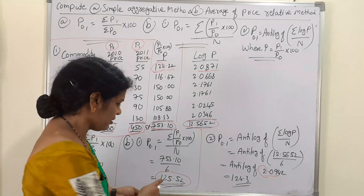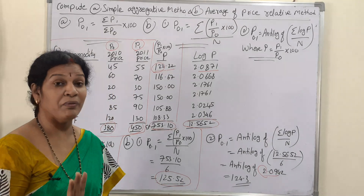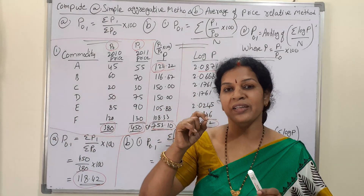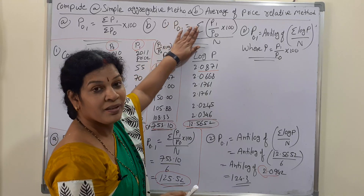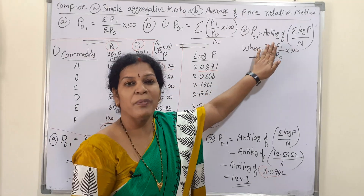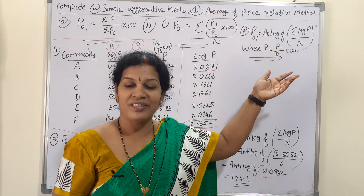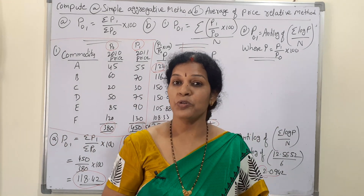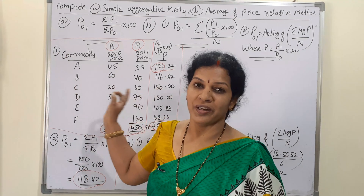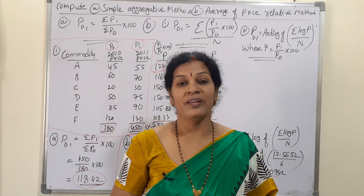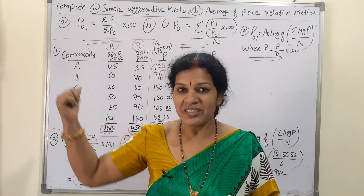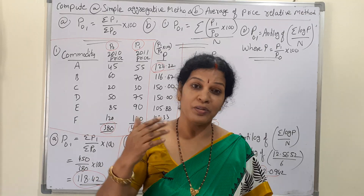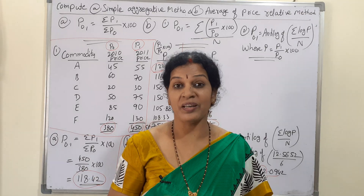Comparing the two methods: by index numbers we got 125.53, and by logarithms we got 124.3. They will not match exactly — there will be a small difference of one or two units. You can use either method. If you are comfortable with logarithms, use that formula; otherwise, use the index number formula. Both are valid approaches for the average of price relative method.